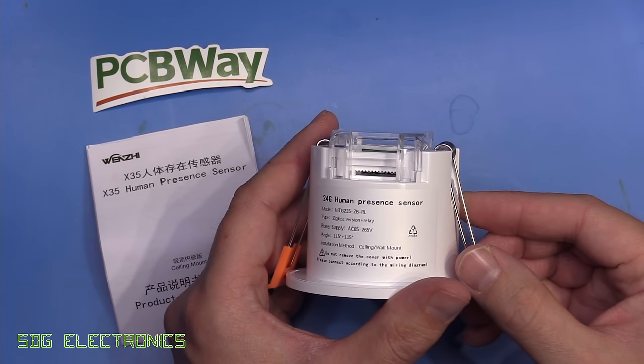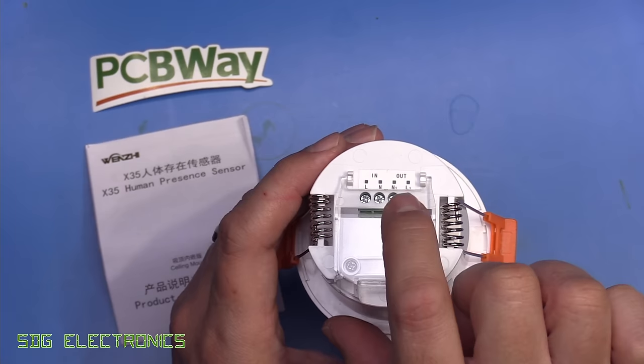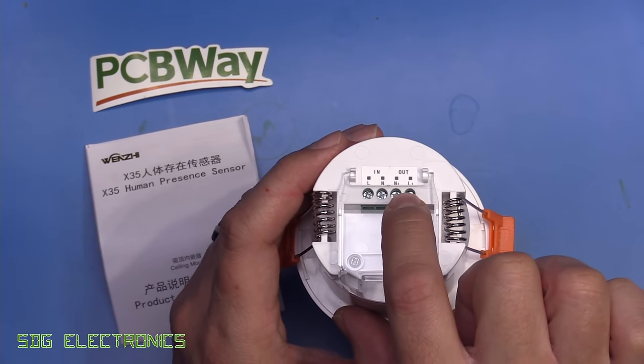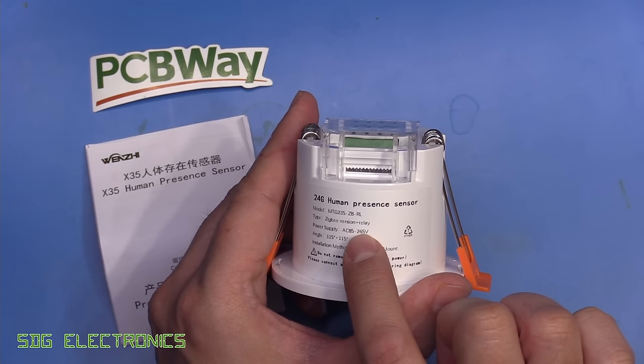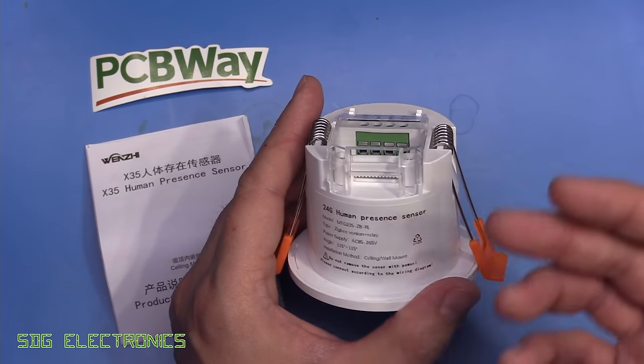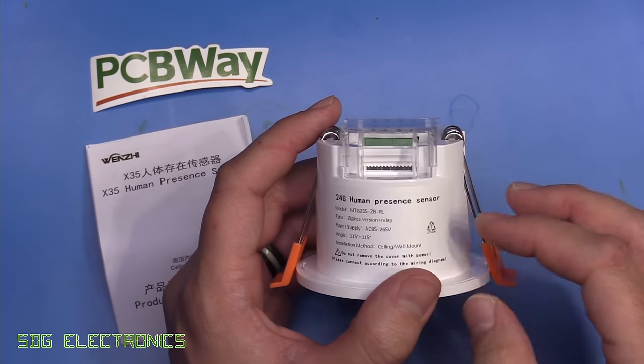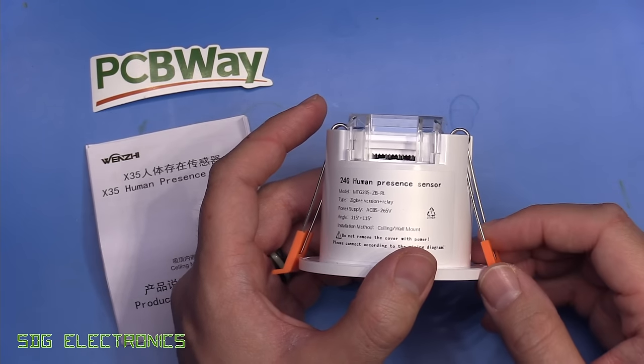There's a few different ways you can use these devices. You can use it as a standalone unit where you provide mains to the input terminals and it gives you a switched mains output on these terminals. The mains voltage is 85 to 265 volts, so you can use it worldwide. You just fit this in the room, connect it to the mains, and it controls your light when it detects someone.